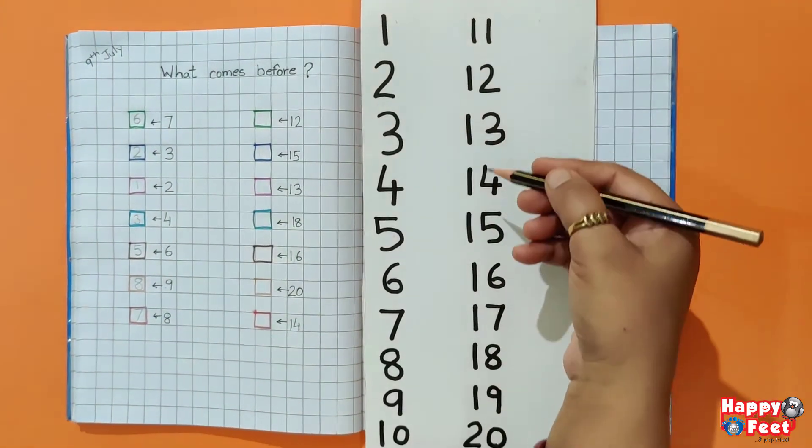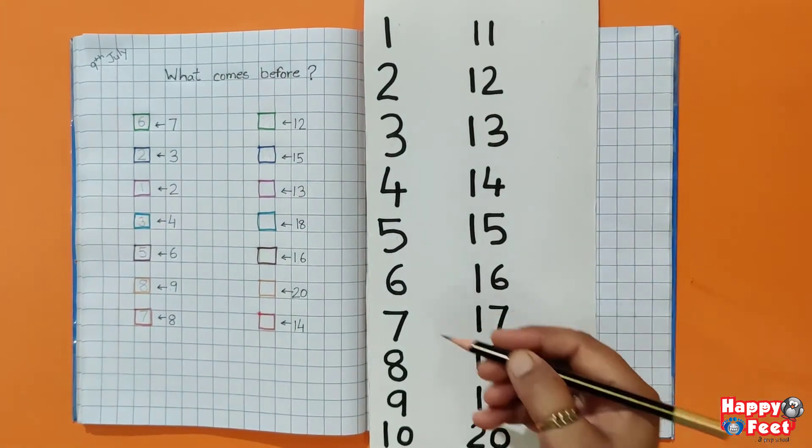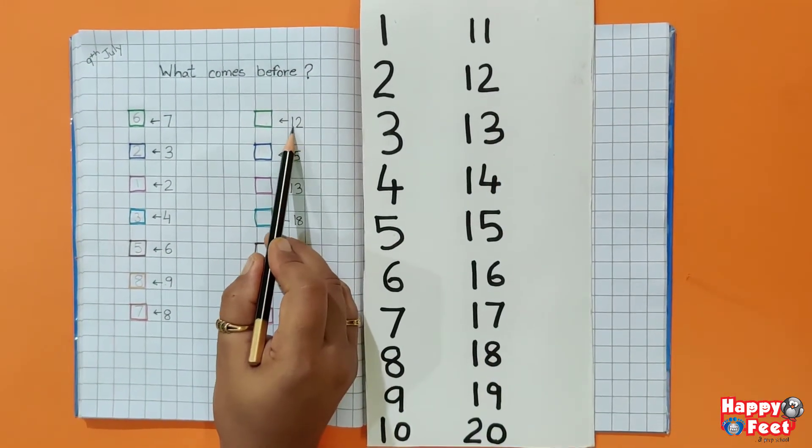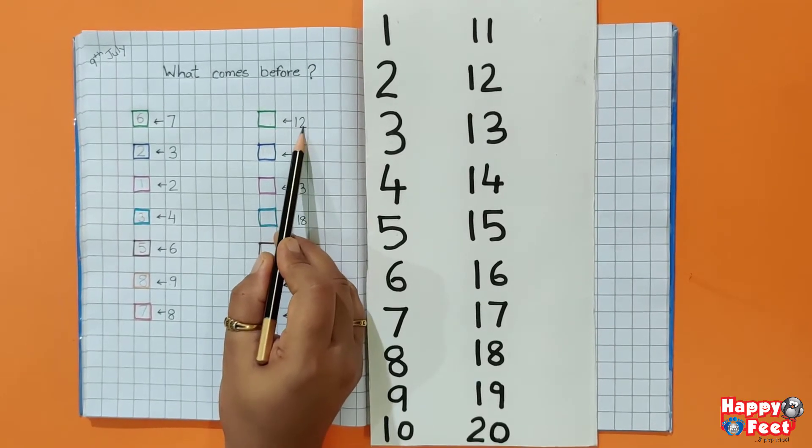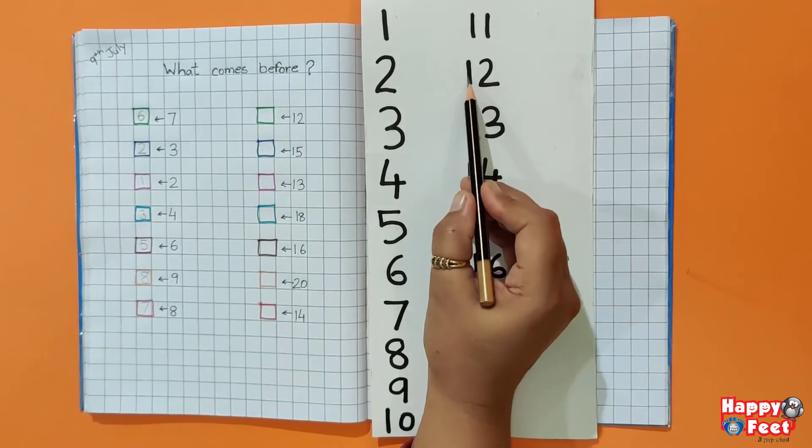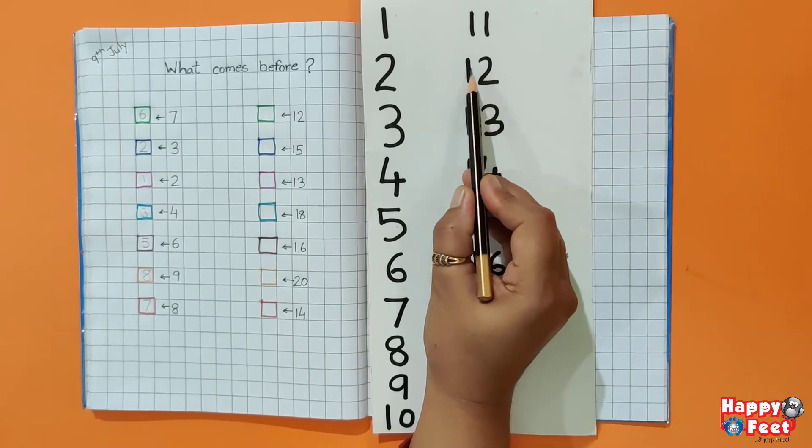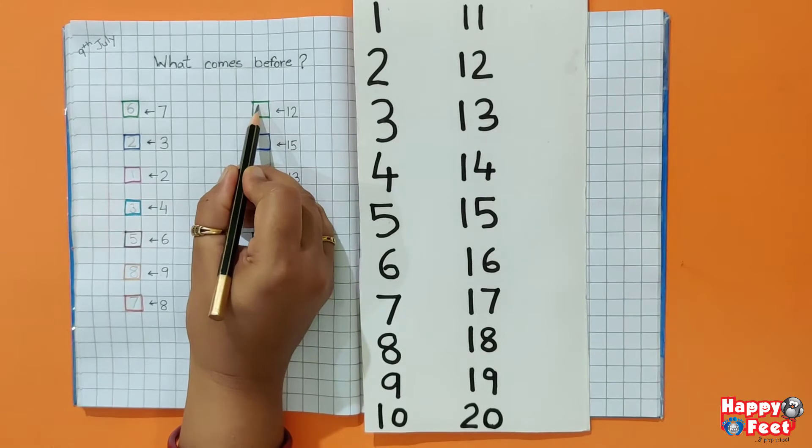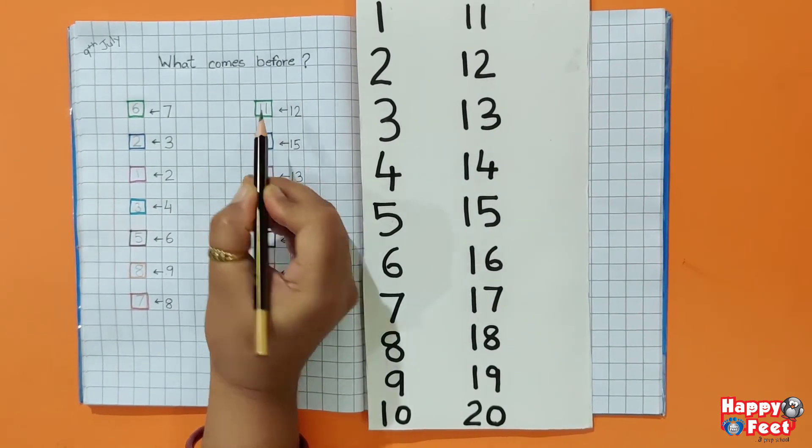Now, with the help of this number chart, we are going to do this. Which number is this? 1, 2. 12. And what comes before 12? 12 के पहले कौन सा नमबर लिखा हुए? 1, 1. 11. We will write here 1, 1. 11.